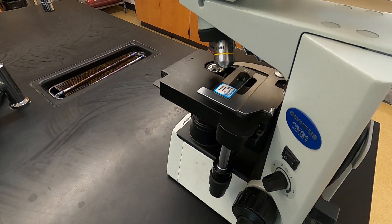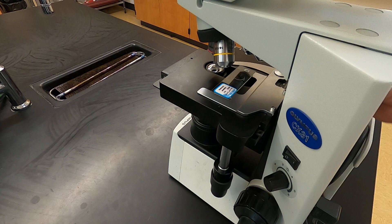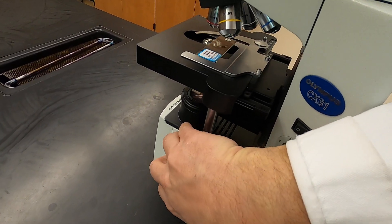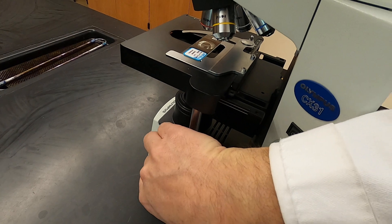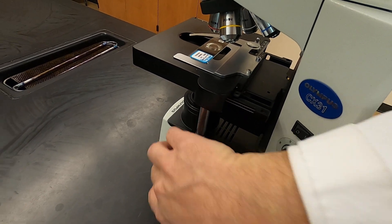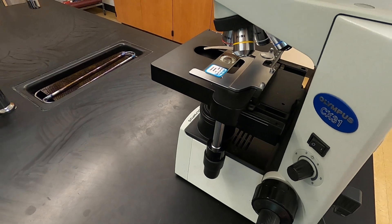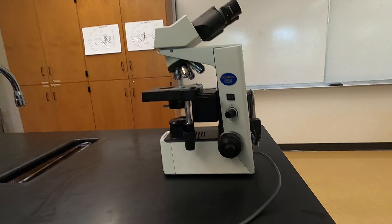Once we get the slide all pushed up against the left hand side, we let go of that arm and that will hold the slide in place. We will then move our slide using our stage adjustments until the area that we want to look at is directly over the hole in the stage. Let me go back to this view.